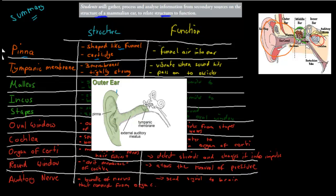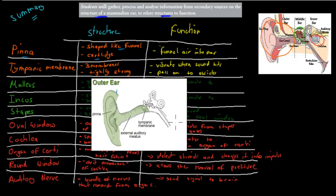The tympanic membrane is this part here. It consists of three membranes and it's tightly strung — these muscles were the things that would tightly string it. The reason why it was tightly strung is because it had to vibrate when there was sound close by. So when sound came in and hit the actual membrane, it had to vibrate and pass on the signal to the ossicles. If it were really relaxed and loose, it wouldn't vibrate. So if it's tightly strung, it'll vibrate once it gets hit. The reason it had that membrane structure is so it could move back and forth whenever air or sound would hit it. Its function was to vibrate when sound hits it and pass on the signal to the ossicles — this is where sound energy would be converted into mechanical energy.